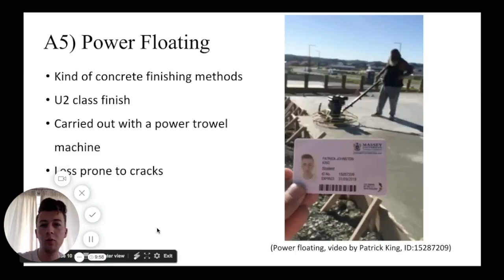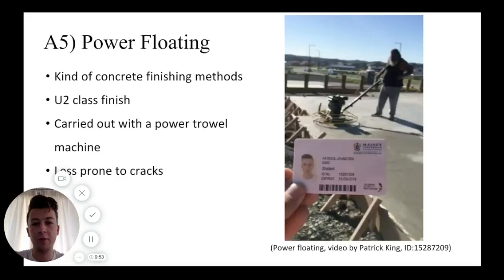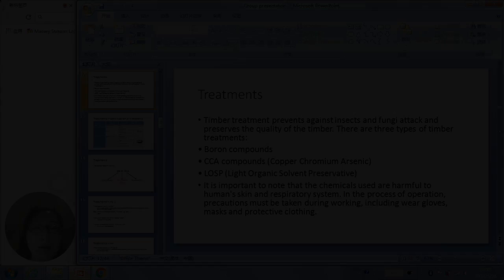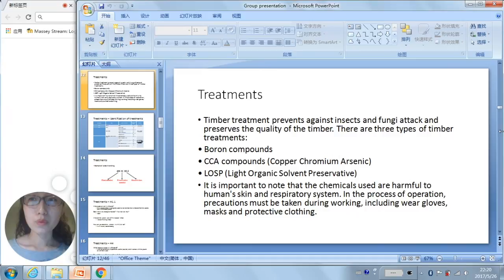Part A5 of the concrete works is the power float finish. When finishing concrete, there are many methods available, and power floating is one type. It is known as a U2 class finish and is generally used for flooring such as carpet. It is carried out by a power trowel that buffs the concrete and is less prone to cracks as a result.